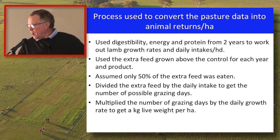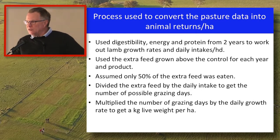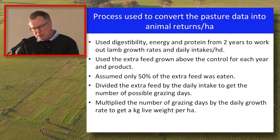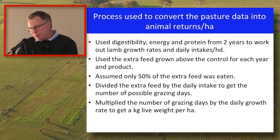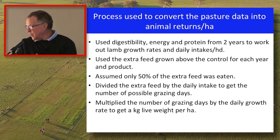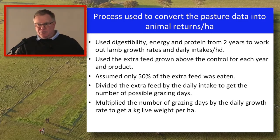I then looked at the extra feed that had been grown from those last two graphs. I assumed that of the extra feed the product grew, only 50% was going to be consumed by animals — the other 50% goes back into the soil and the organic pool. I then took that extra feed and divided it by the animal intake figures I'd worked out, which gives a possible number of grazing days for that product in that year. Multiply the grazing days by the daily growth rate, and I end up with kilograms of live weight per hectare produced by the various products.